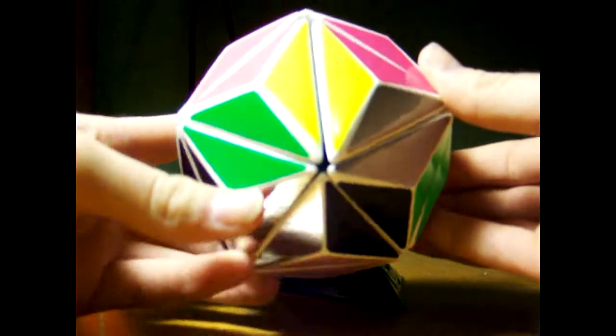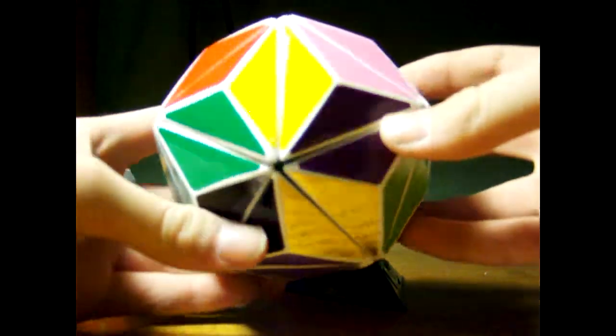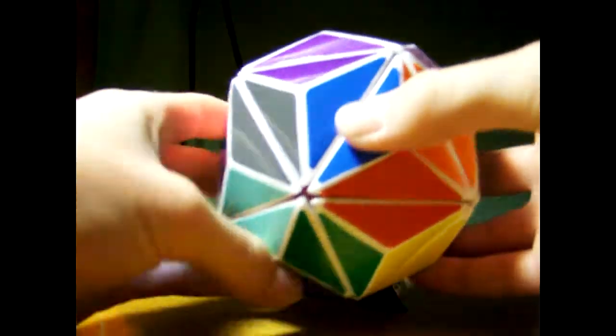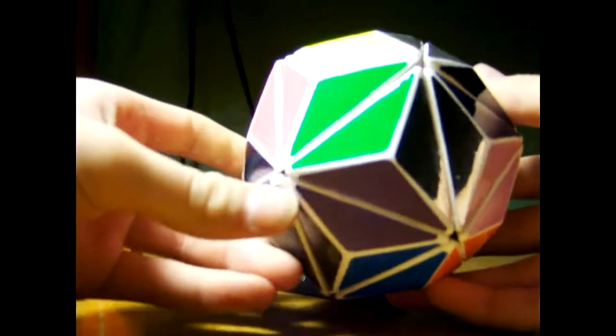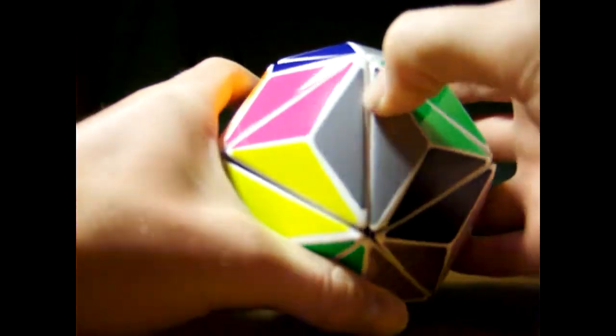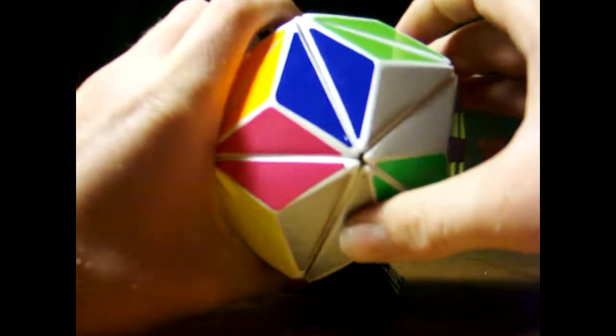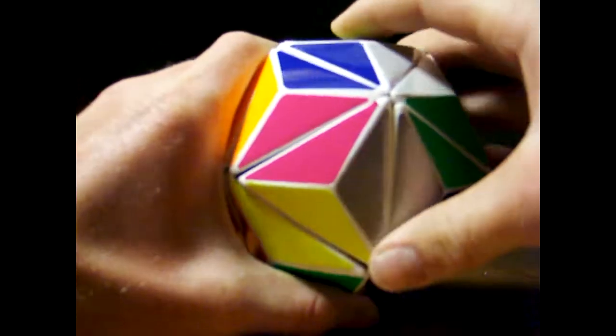There are 30 colors on this puzzle because this puzzle contains 30 sides. Each color is different, even though some shades are quite similar. And each sticker was cut out of high quality oracle 651 vinyl.